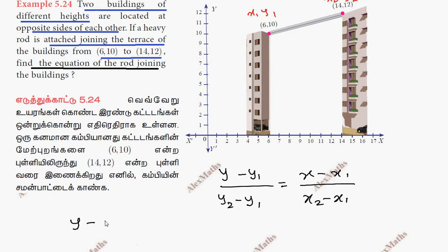So y minus y1 divided by y2 minus y1, 12 minus 10, equal to x minus x1 by x2 minus x1.